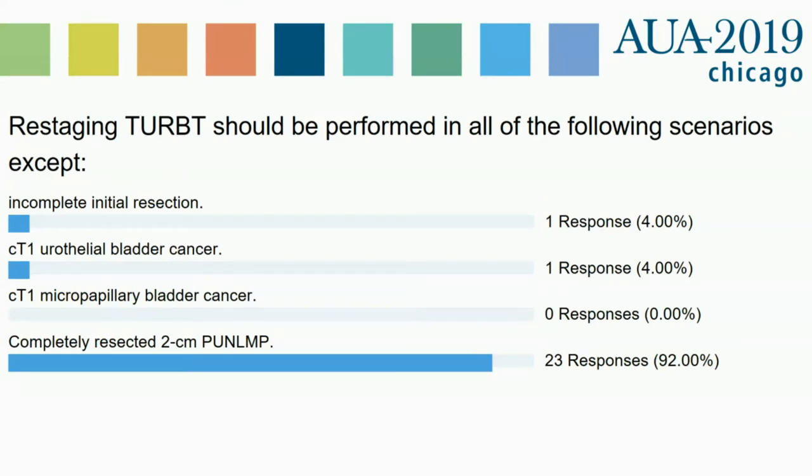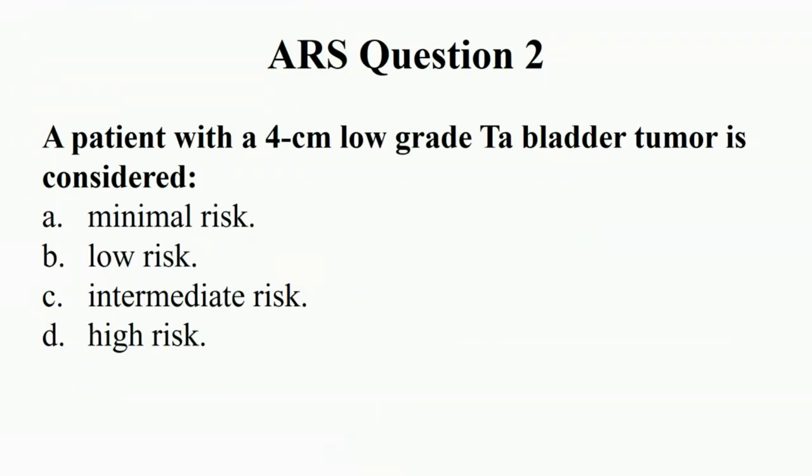It looks like the vast majority of folks have said the pun lump. Question two: A patient with a four-centimeter low-grade TA bladder tumor is considered what risk level — minimal risk, low risk, intermediate risk, or high risk?